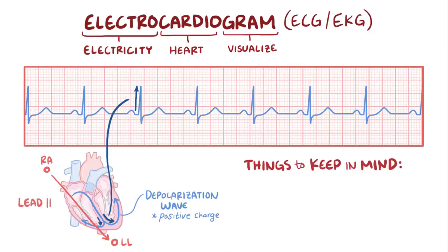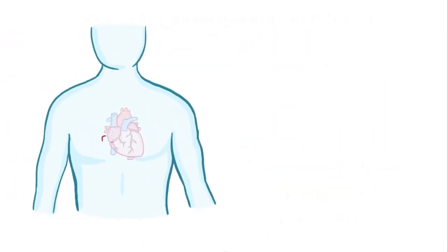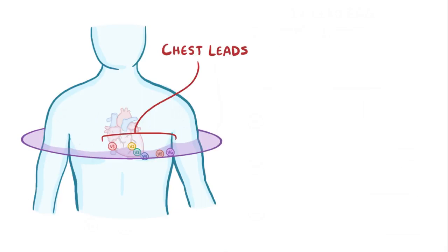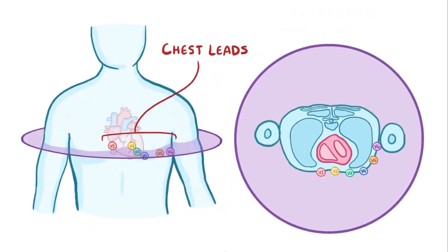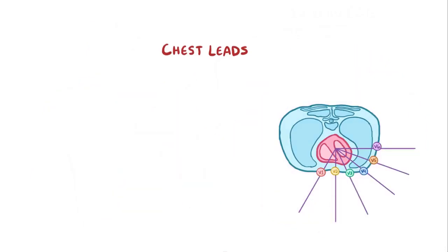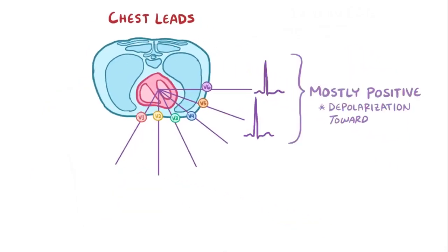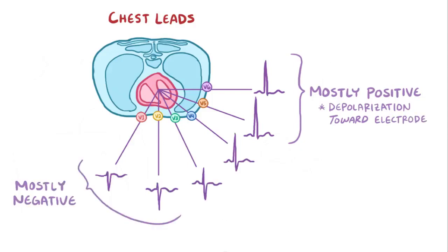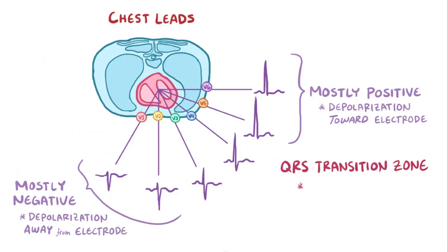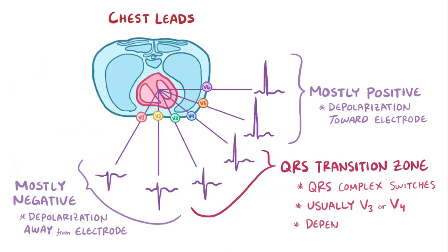To read an ECG, there are a few things to keep in mind, and one of them is figuring out the QRS transition. The chest leads, V1 through V6, view the heart through the horizontal plane, and each one has its own slightly different view. These views will have a mostly positive deflection if a depolarization wave is moving toward them, and a mostly negative deflection if the depolarization wave is moving away from them. The QRS transition zone refers to where the QRS complex switches from being mostly negative to mostly positive from the point of view of the chest leads. The QRS transition usually happens in lead V3 or V4, depending on things like chest lead placement and the exact anatomy of a person's heart.